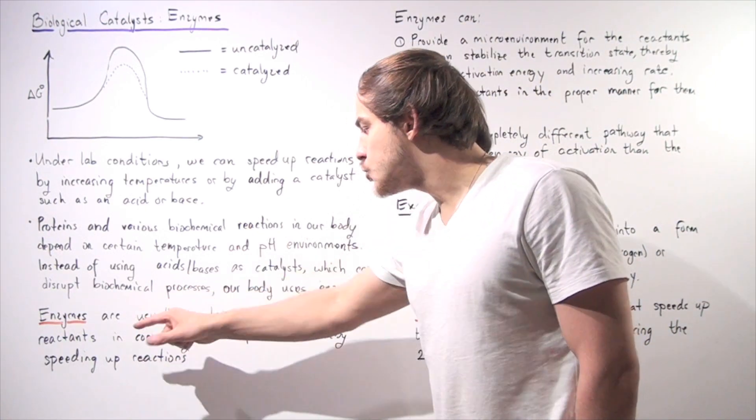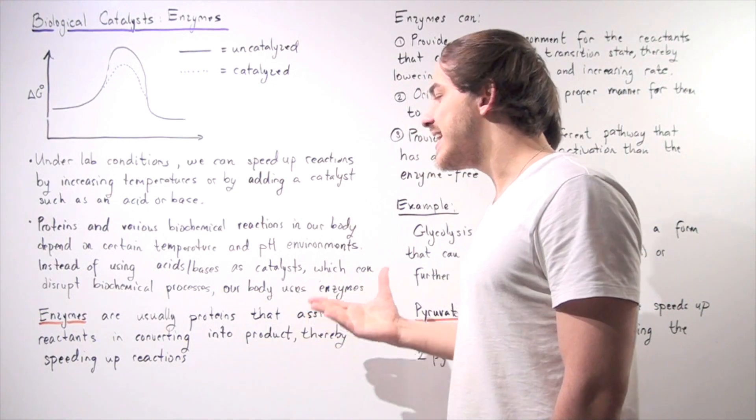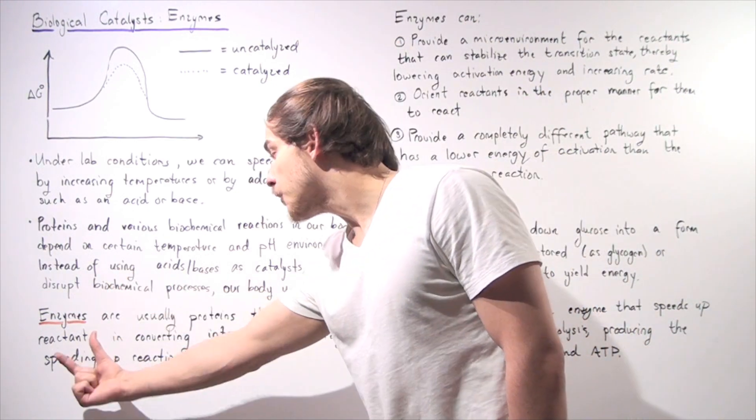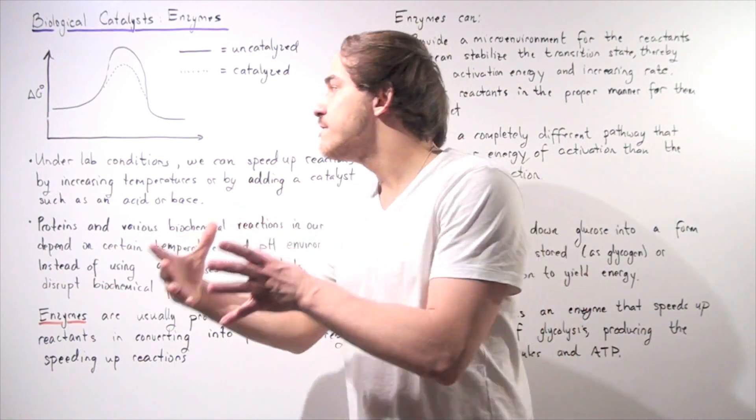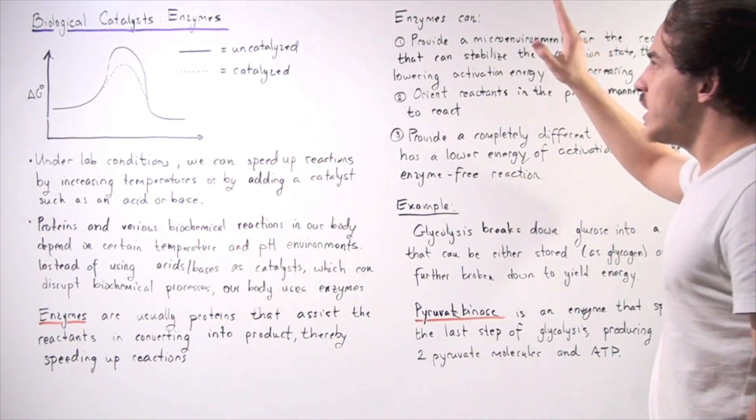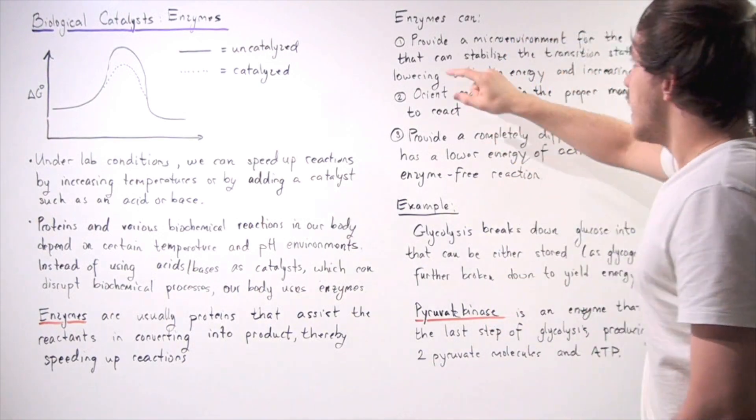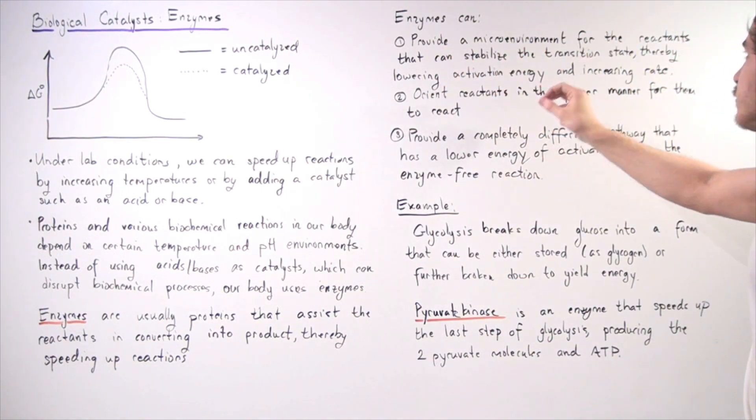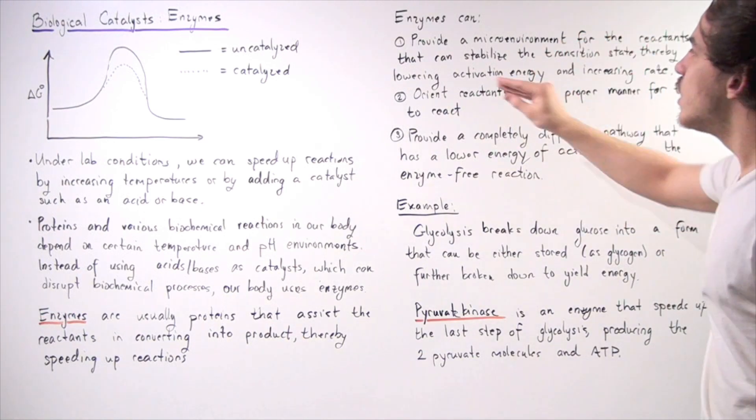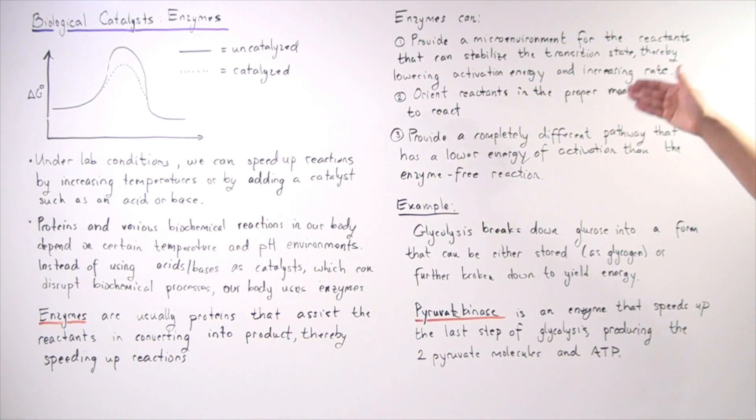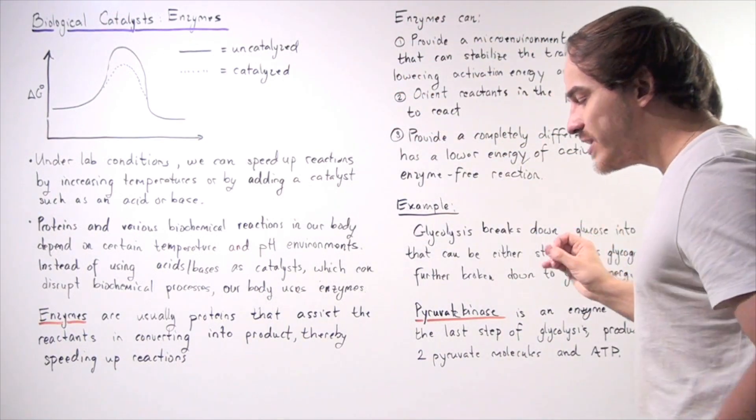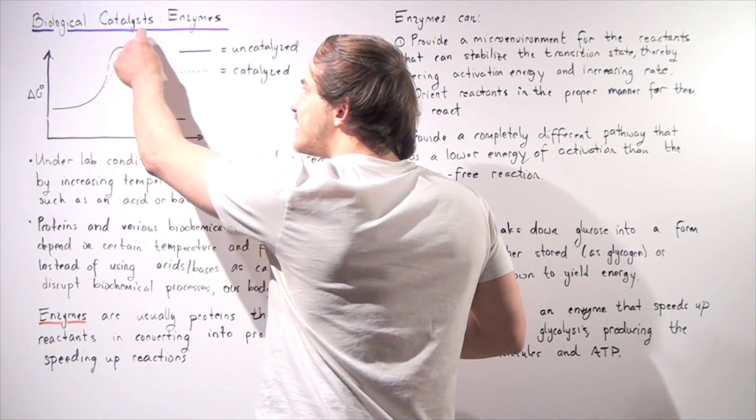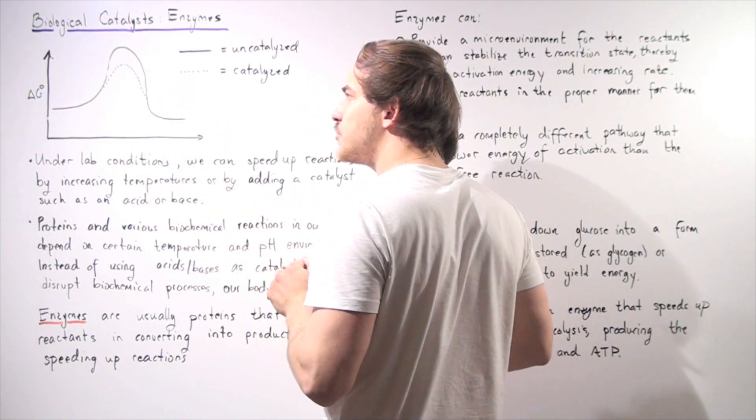Enzymes are usually proteins that assist in the reaction. They assist by converting our reactants to our products in a quicker fashion. So enzymes can do the following things: provide a microenvironment for the reactants that can stabilize the transition state, thereby lowering the activation energy and increasing our rate. So basically, what an enzyme can do is stabilize our transition state energy, lowering the activation energy, thereby increasing our rate of reaction.